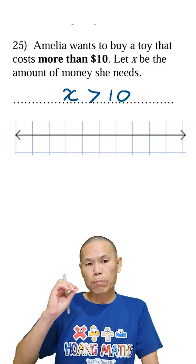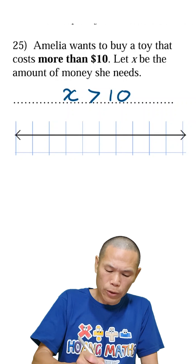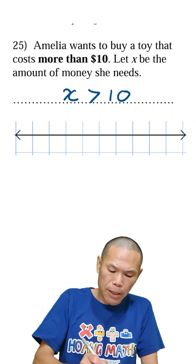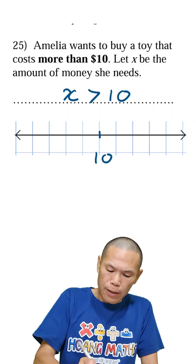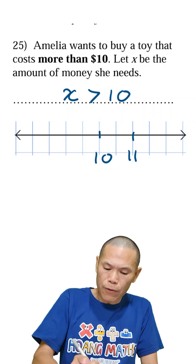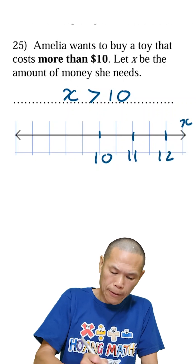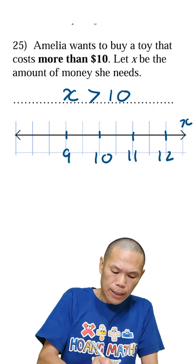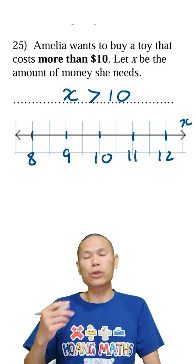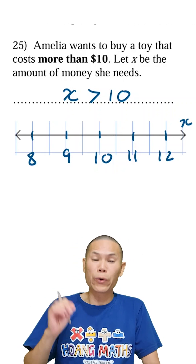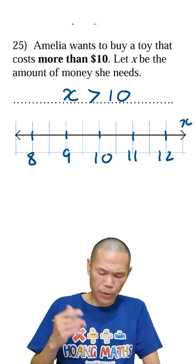Now to plot that on the number line, we start from 10 here, then 11, 12. You can write one number per grid if you wish. Going left: 9, 8. So this marks our X axis on the number line.